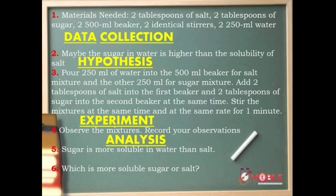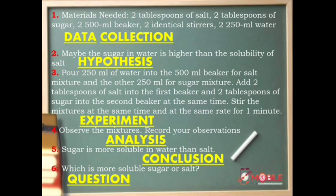Next, number five: sugar is more soluble in water than salt. Definitely, that is a conclusion. Next, number six: which is more soluble, sugar or salt? So obviously this is a question. So if you got it all correct, then you have your six points for a total of twelve points from the first activities that we have.